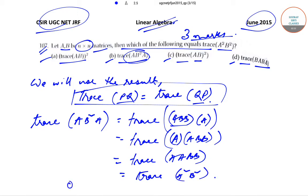see, this establishes that option B is the correct option. So today we have solved the linear algebra question which came in the June 2015 paper of CSIR UGC NET JRF exam. We'll be solving many such questions in the subsequent videos. Till then, keep watching Softest Classes videos for more solutions and content. Thank you very much.